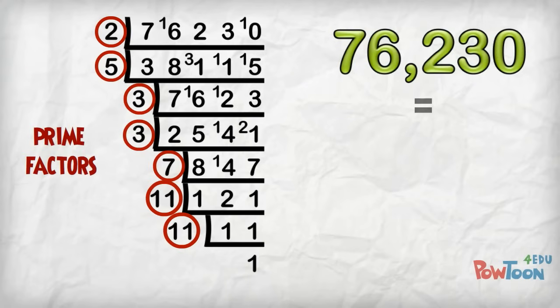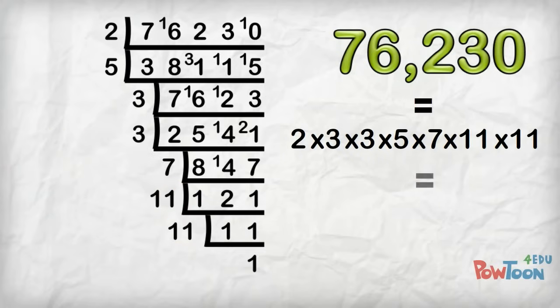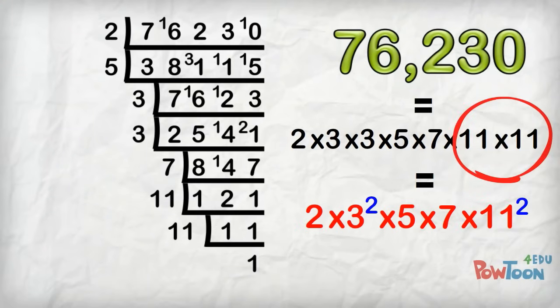Gather all the prime factors in ascending order: 2 x 3 x 3 x 5 x 7 x 11 x 11. And use exponential notation for the repeated factors: 2 x 3² x 5 x 7 x 11².